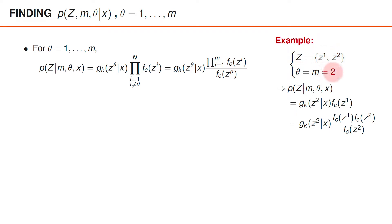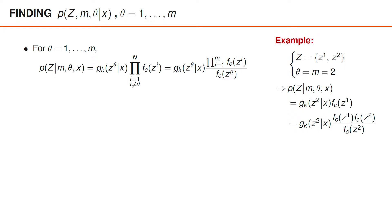For instance, if we have two measurements and theta is equal to 2, such that the second measurement is an object measurement, then the distribution over z given m, theta and x is gk of z2 given x, since z2 is the object measurement, times fc of z1, since z1 is a clutter measurement. Here we can express fc of z1 as the product of fc of z1 and fc of z2 divided by fc of z2, since fc of z2 will cancel out. We note that fc of z1 times fc of z2 is the product over i from 1 to m of fc of zi, whereas the denominator is fc of z theta, which means that the expression obtained in this example matches the general expression.